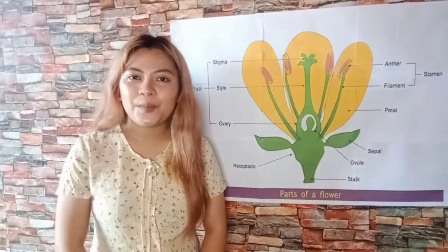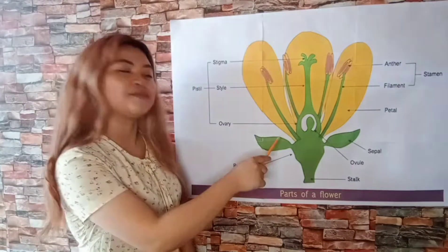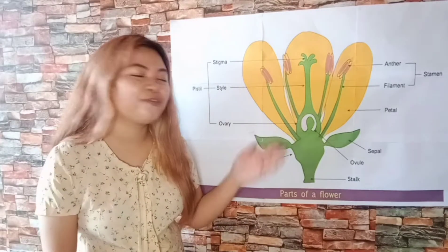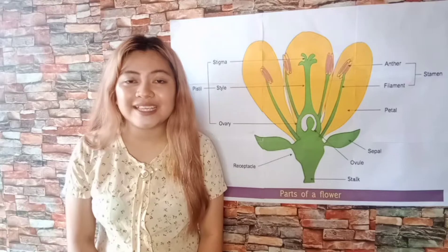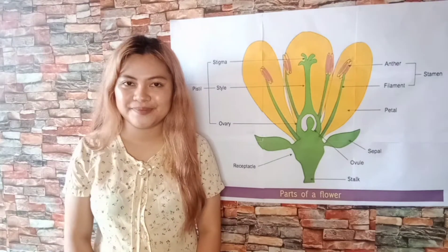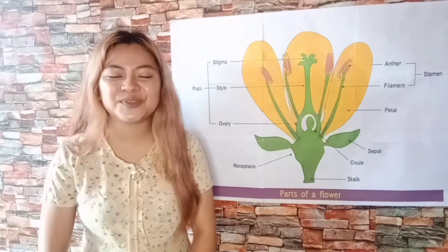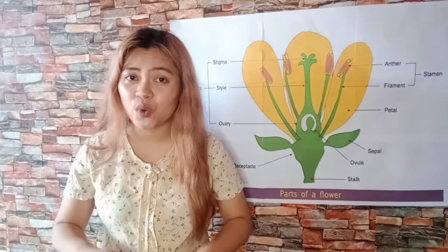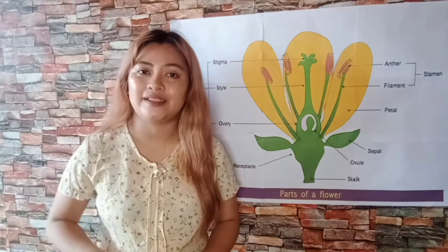The petal is the bright and colorful part of the flower, and these petals make the flower look very attractive. Petals have different colors. Who can give me an example of a flower that has red petals? Jana, what is it? Yes — rose. Indeed, rose has red-colored petals, and rose also comes in different colors.